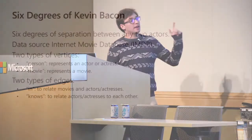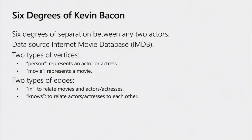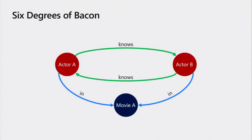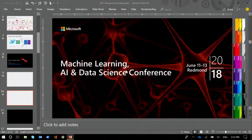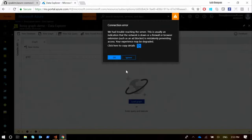There are relationships between an actor or actress and a movie, and actors or actresses between each other. A very simple representation of this graph would look the following way: actor or actress A knows person B in a doubly-linked structure, and they both are in the same movie. Let's go and dive into it.